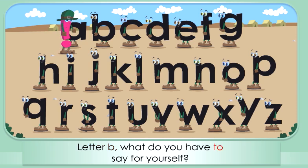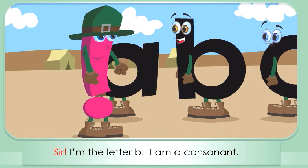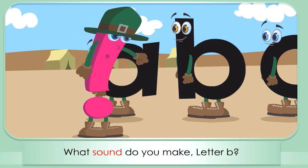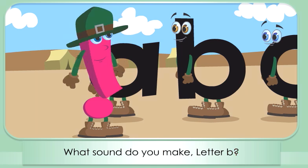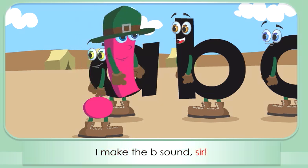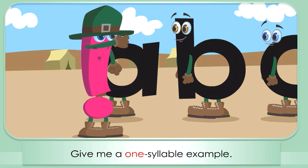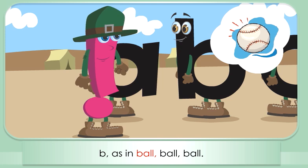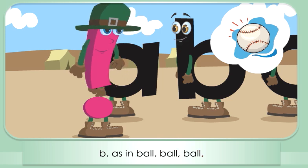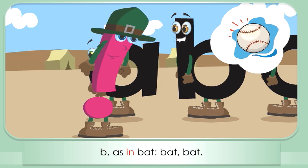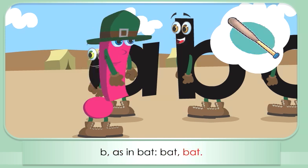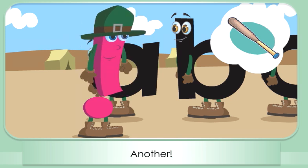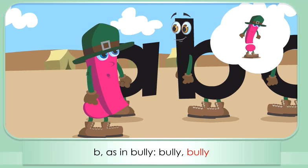Letter B, what do you have to say for yourself, sir? I'm the letter B. I am a consonant. What sound do you make, letter B? I make the buh sound, sir. Give me a one-syllable example. Buh as in ball. Another? Buh as in bat. Another? Buh as in bully.